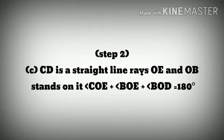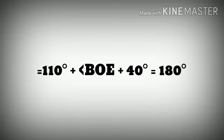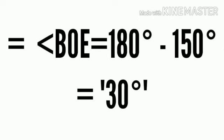CD is a straight line and rays OE and OB stand on it. Therefore, angle COE plus angle BOE equals 180 degrees. So, 110 degrees plus angle BOE plus 40 degrees equals 180 degrees. Therefore, angle BOE is equal to 180 degrees minus 150 degrees, which equals 30 degrees.